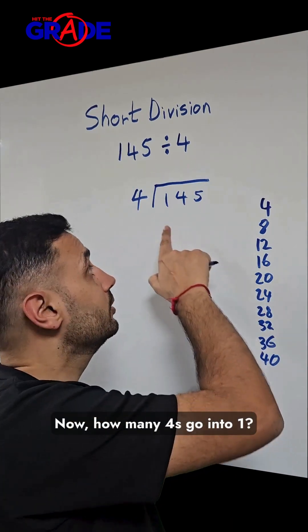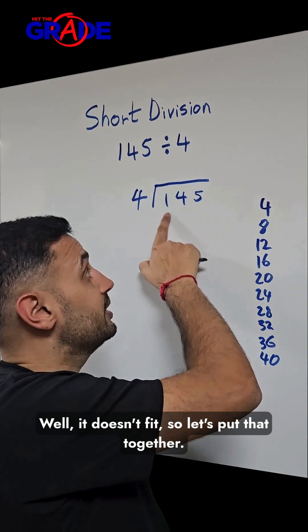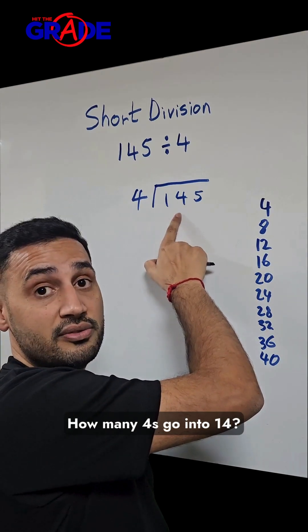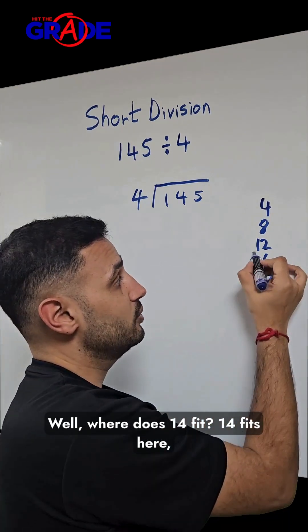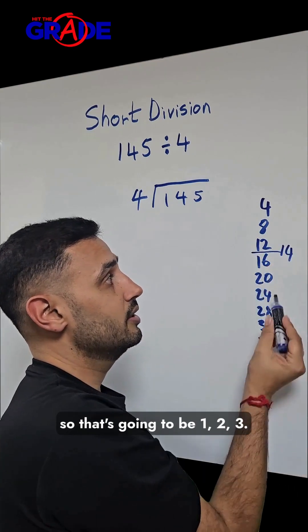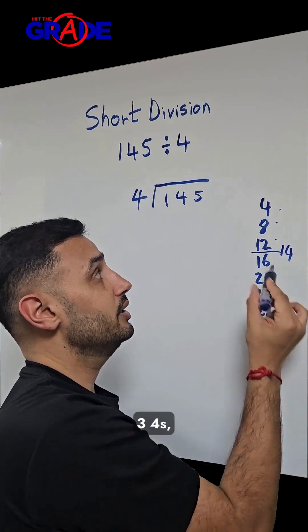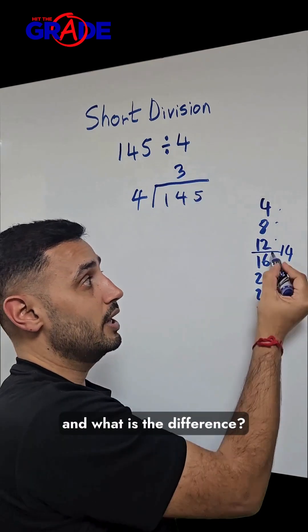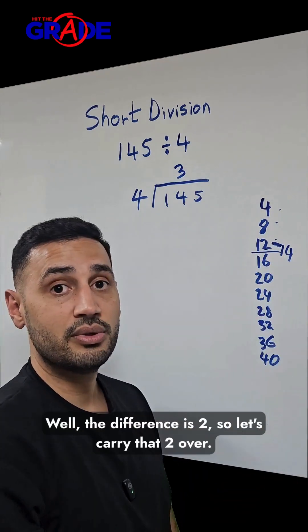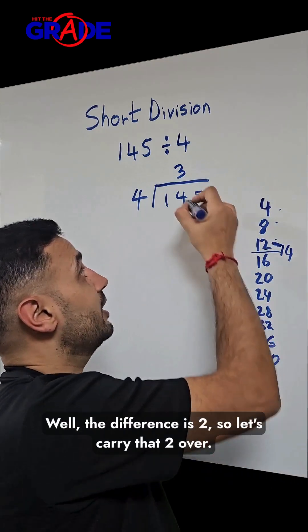Now, how many 4s go into 1? Well, it doesn't fit, so let's put that together. How many 4s go into 14? Well, where does 14 fit? 14 fits here, so that's going to be 1, 2, 3. 3 4s, and what is the difference? Well, the difference is 2. So let's carry that 2 over.